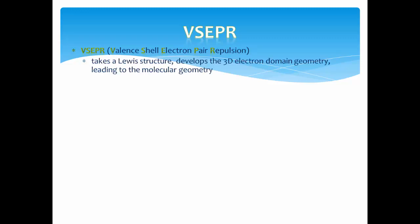One way to find molecular shape is through VSEPR, which stands for Valence Shell Electron Pair Repulsion. It is a model that takes a Lewis structure, develops the 3D electron domain geometry from it, leading to the molecular geometry. Its goal is to minimize repulsions between electrons.